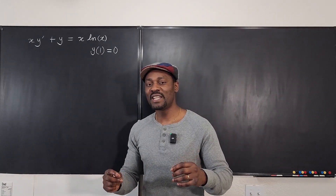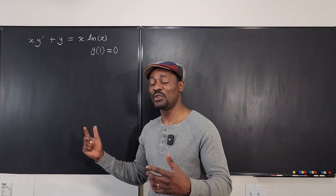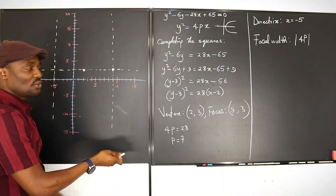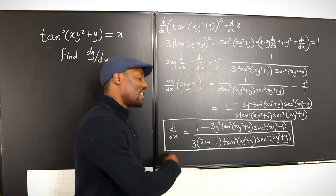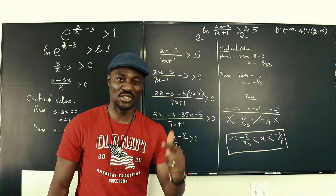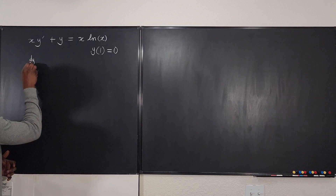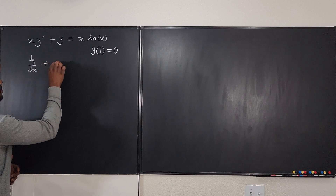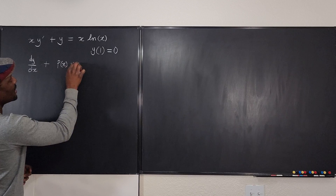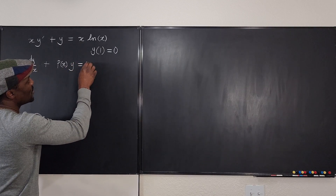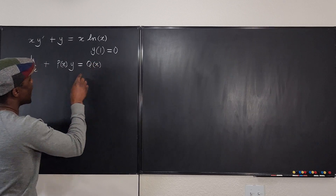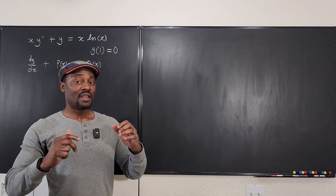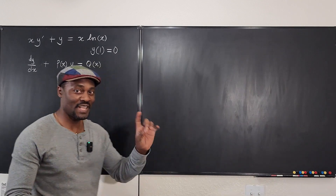Now, is it linear? We have to try to write it in standard form to see if we can get it to look like dy/dx plus P(x) times y equals Q(x). If you can make it look like this, then it is a linear first-order differential equation in standard form.